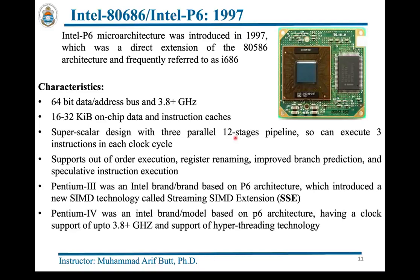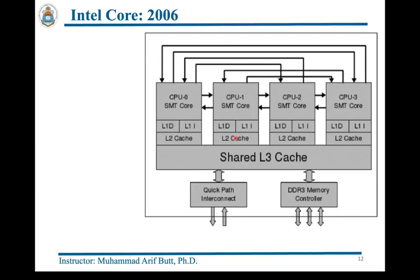Pentium 4 raised the clock frequency to 3.8 GHz and also added support for hyper-threading technology. Hyper-threading is Intel-specific hardware that allows two threads to be executed simultaneously on one physical processor. The 64-bit Intel Pentium 6 series went up to a maximum clock rate of 3.8 GHz. However, increasing processor performance by raising clock speed had two limitations: more power consumption and more heat dissipation.